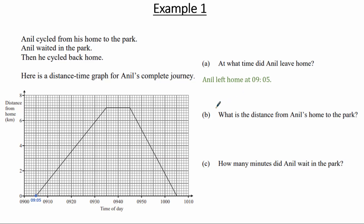In part B, what is the distance from Anil's home to the park? Coming to the distance time graph, we note that this stage corresponds to the journey from Anil's home to the park. To find the distance, we come across horizontally and note that this point is between 6 and 8 kilometers, therefore it's 7 kilometers. The distance from Anil's home to the park equals 7 kilometers.